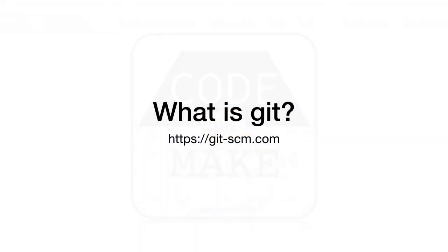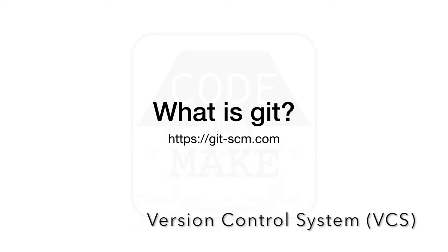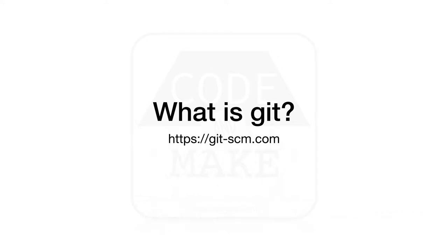What is Git? Git is a version control system, or VCS. An essential feature of a version control system is that it allows you to save snapshots of files. In Git terminology, these snapshots are known as commits.